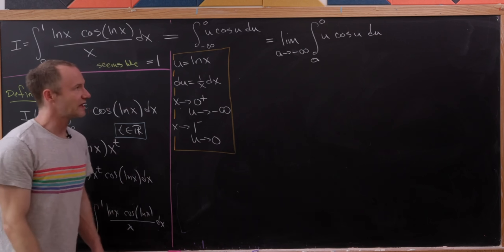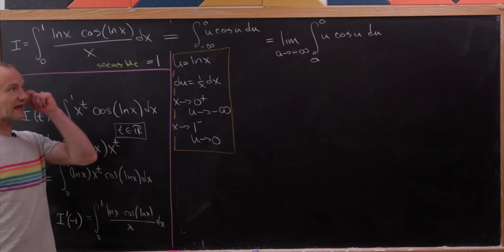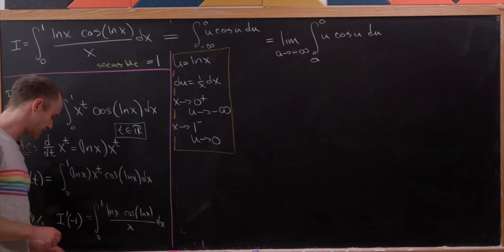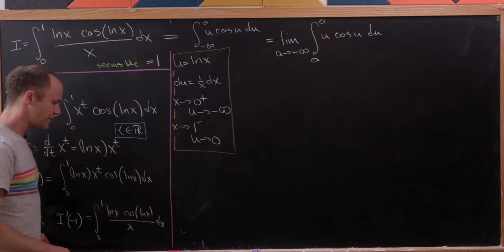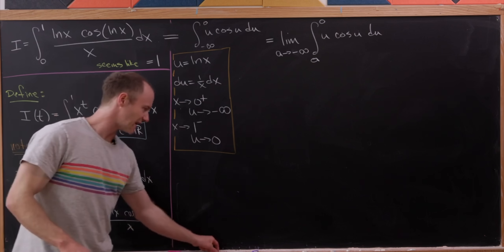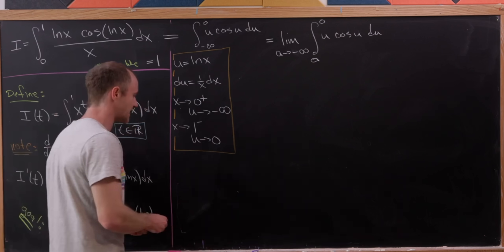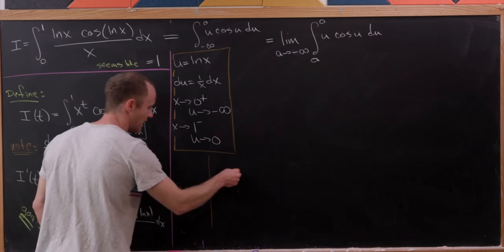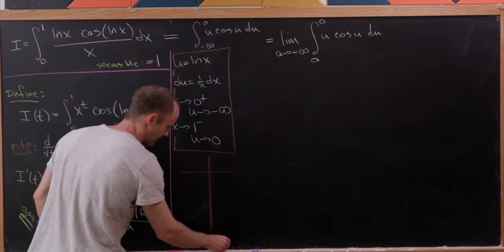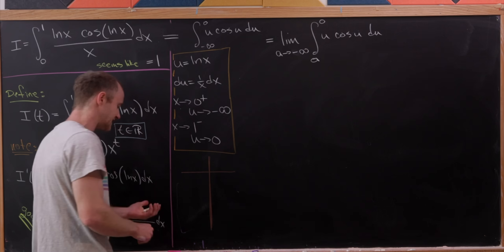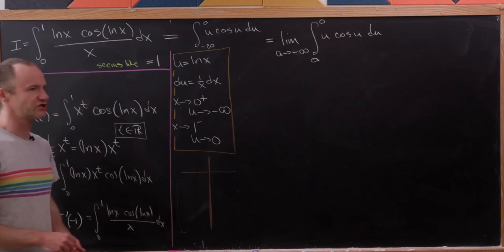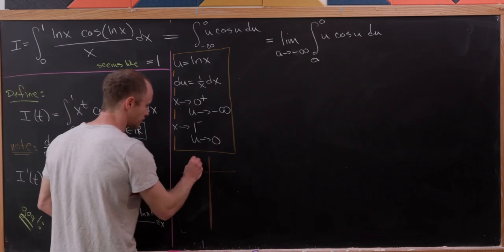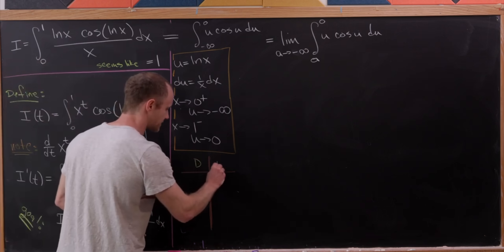We're going to use the DI method — the internet's favorite way of integrating something like this — which is just a quick way of doing integration by parts.